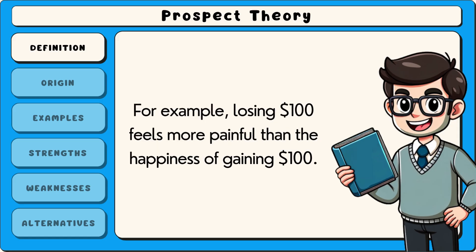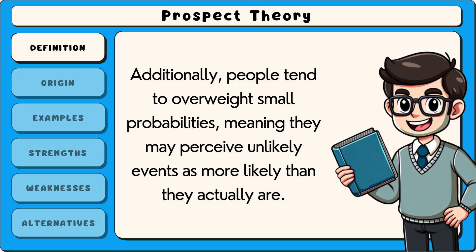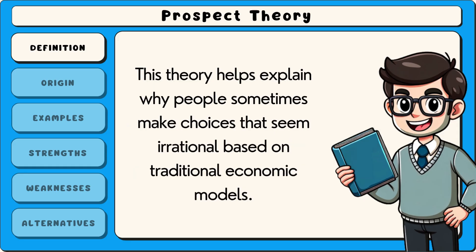For example, losing $100 feels more painful than the happiness of gaining $100. Additionally, people tend to overweight small probabilities, meaning they may perceive unlikely events as more likely than they actually are. This theory helps explain why people sometimes make choices that seem irrational based on traditional economic models.